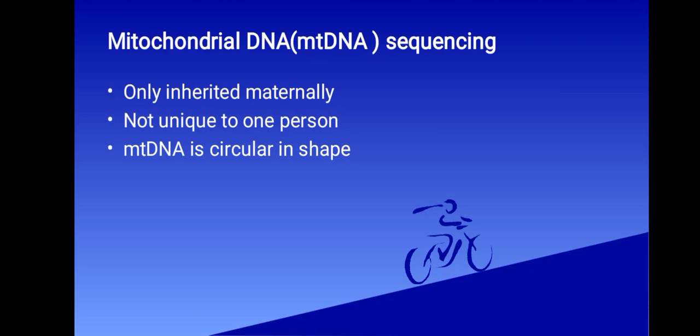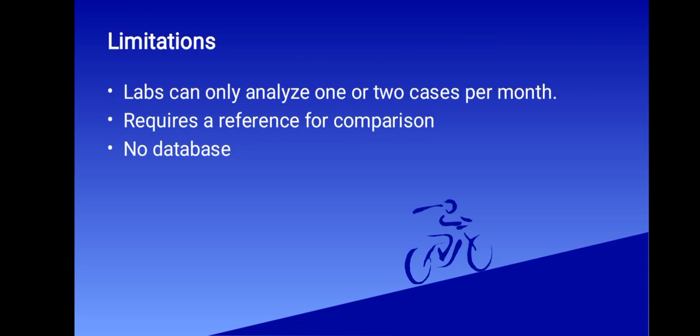Even very small cut hairs are capable of generating a mitochondrial DNA profile for comparison. Because mtDNA analysis is time-consuming, and it's not statistically discriminating as nuclear DNA, mitochondrial DNA analysis is usually only performed on hair or other evidence when there is no other physical evidence available for investigation.